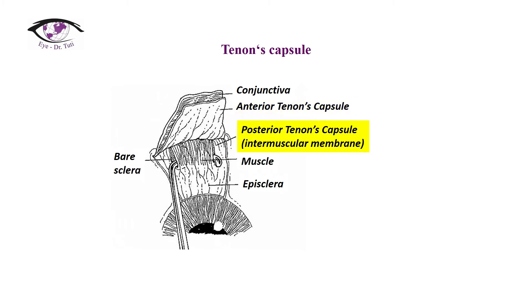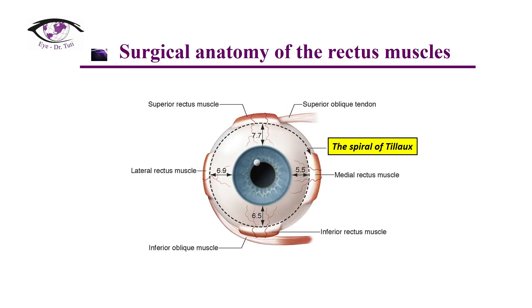Just before discussing the surgical anatomy of the rectus muscles, let's summarize the main pre-surgical parameters. It is very important to note in the patient's chart whether the patient has pseudostrabismus due to epicanthal folds, due to angle kappa, or due to a mongoloid or antimongoloid structure of the eye. As a resident, all those parameters should be communicated to your supervisor during your strabismus rotation.